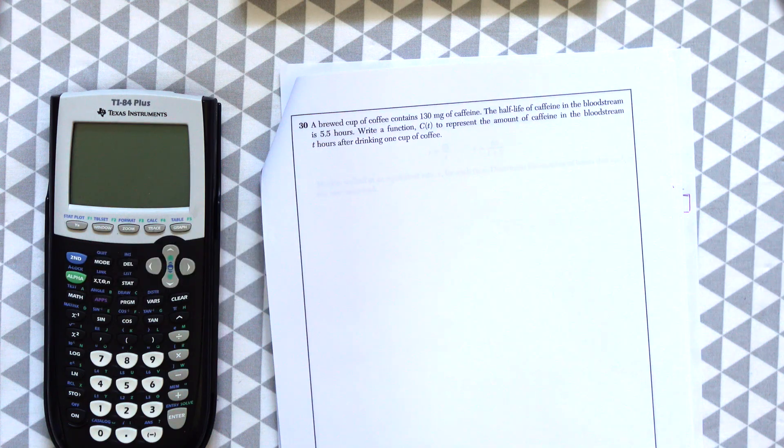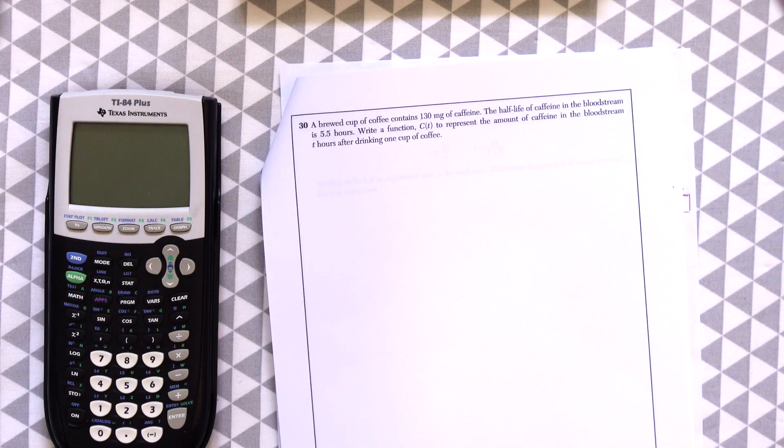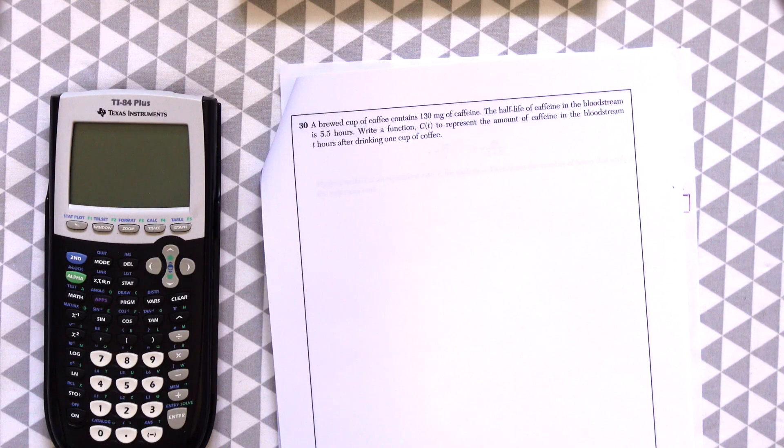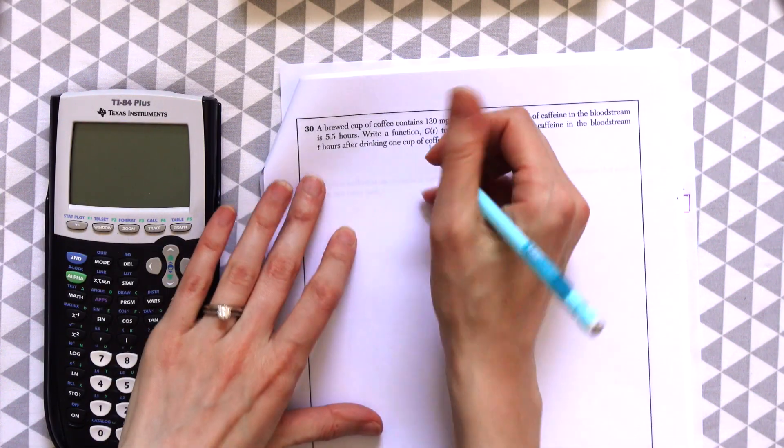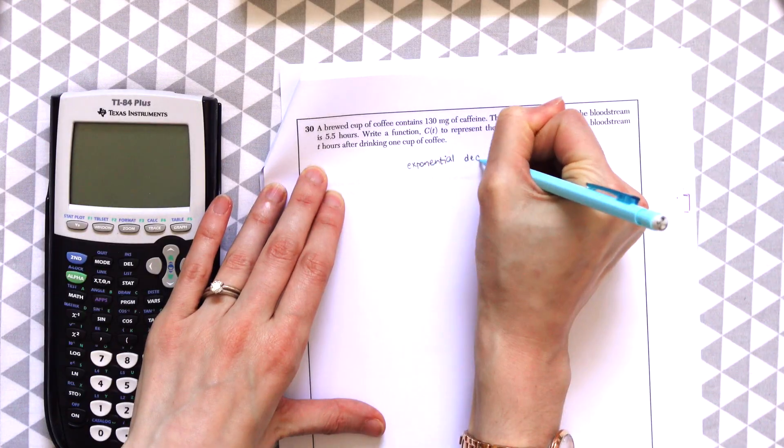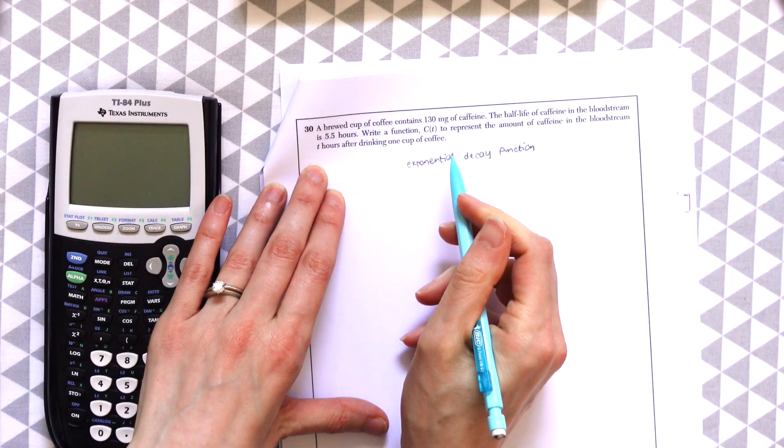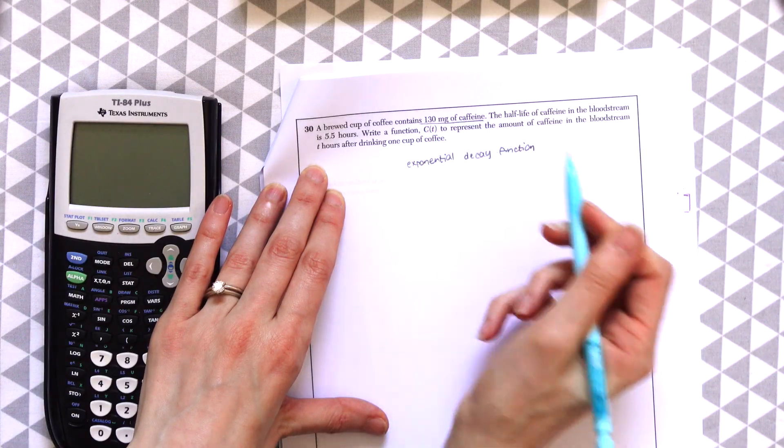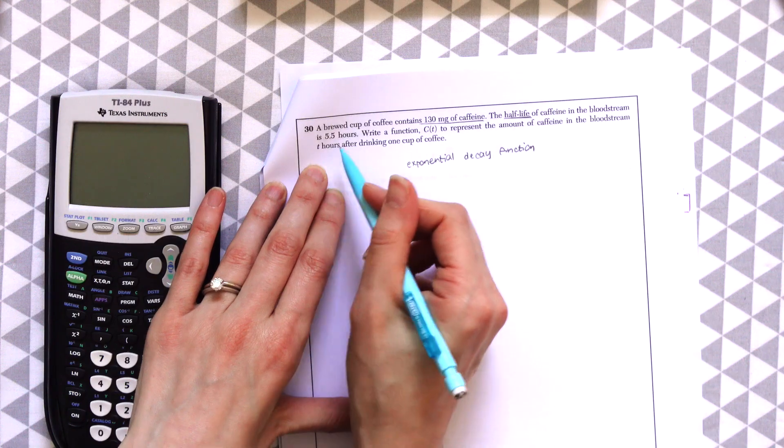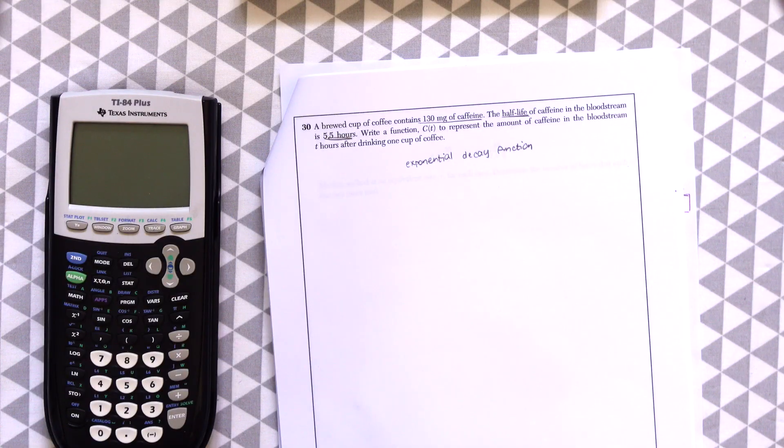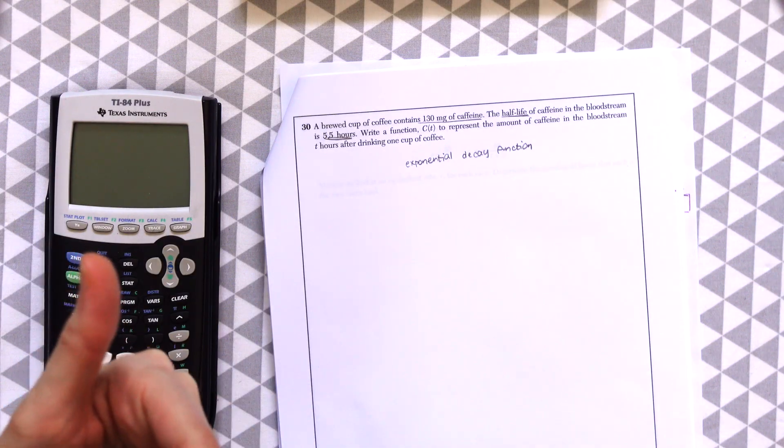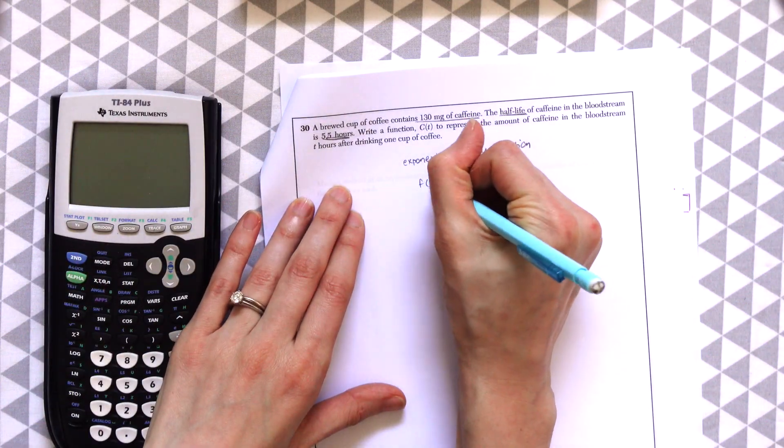Question 30. A brewed cup of coffee contains 130 milligrams of caffeine. The half-life of caffeine in the bloodstream is five and a half hours. Write a function c of t to represent the amount of caffeine in the bloodstream t hours after drinking one cup of coffee. So here it seems like this is going to be an exponential decay function. I knew that because it says there's 130 milligrams of caffeine and the half-life happens every five and a half hours. The half-life means that the caffeine level is going to cut in half every five and a half hours.